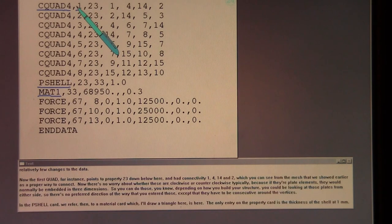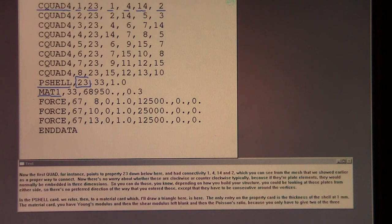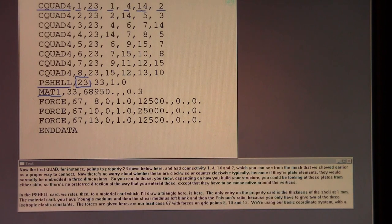Now, the first quad, for instance, points to property 23 down below here, and has connectivity 1, 4, 14, and 2, which you can see from the mesh that we showed earlier is a proper way to connect. Now, there's no worry about whether these are clockwise or counterclockwise, typically, because if they're plate elements, they would normally be embedded in three dimensions. So, you can do those, depending on how you build your structure, you could be looking at those plates from either side. So, there's no preferred direction of the way that you enter those, except they have to be consecutive around the vertices.